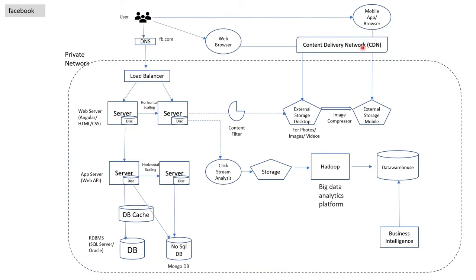So first these images will be compressed and resized, and then stored in a different external storage. We are doing so much for images and videos because they are big in size and take time to download compared to normal data. One last thing we will do for images and videos is apply a content delivery network in different locations around the world. For example, a user in India requesting an image from a server in USA — that image will be served the first time and saved at a CDN location in India. Next time, another user from India will get it from that CDN location, not the main server in USA. This makes images and videos faster to download.